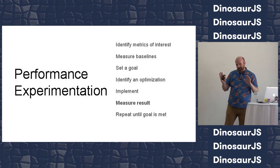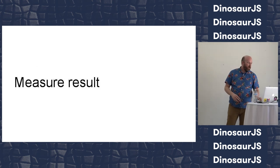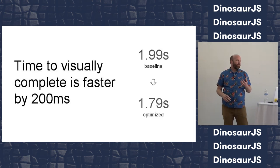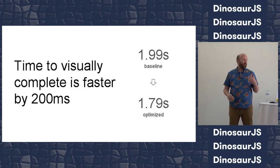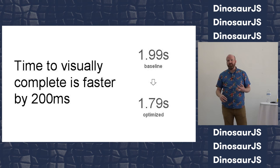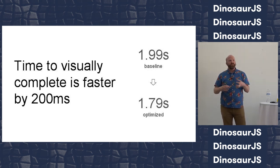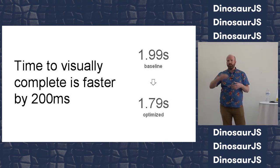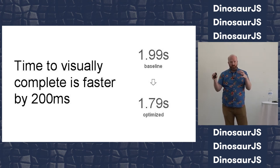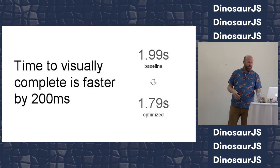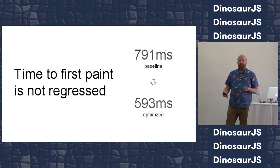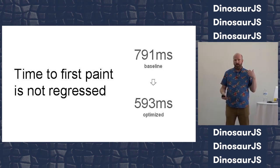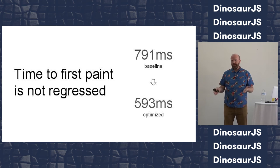So we've got all this in place — let's measure some results. What I found when I ran this at the hotel room before heading down here is that time to visually complete is in fact faster by 200 milliseconds. This makes sense because 200 milliseconds is about how long it takes to do the round-trip request for that file under the VM's network conditions. And the next part — time to first paint was not regressed; in fact, we made it faster by 200 milliseconds as well. All around a success — ship it.